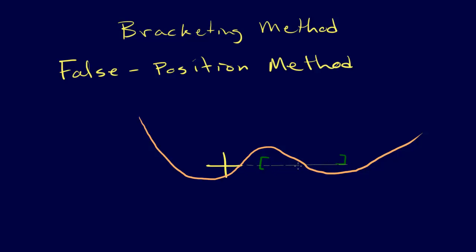Alright, so this is our bracket, and we say the root lies somewhere in there. The false position method evaluates our function at these two points. We evaluate it there, it's positive. We evaluate it there, it's negative. Positive there, negative there.